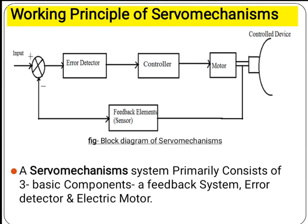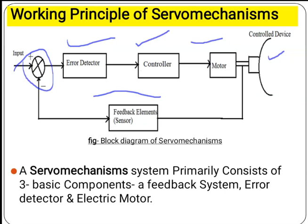Now we can explain the working of servomechanism by the block diagram. In this block diagram you can observe that there are a comparator, an error detector, then a controller, then a motor, the load, and the feedback signal. According to this block diagram we can explain the working principle of servomechanism.